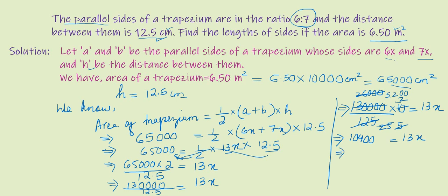So 13x equals 10,400, which implies x equals 10,400 divided by 13.